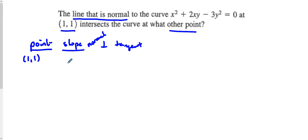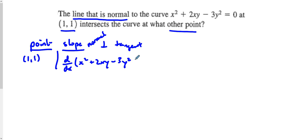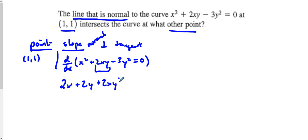Let's continue on. What we're going to do is take the derivative of this curve with respect to x, and we're going to use some implicit differentiation. What we have here is 2x plus 2y — we're going to use the product rule — giving us 2x plus 2xy prime minus 6y times y prime.